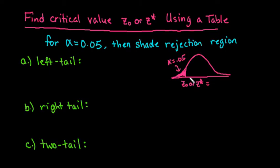The table only lists the positive z-score, but if you notice that we would have to have a negative on this one, since it's below the mean of zero. So for this one, our z-naught or z-star is just negative 1.645. So remember that this is always going to be negative for left-tail.